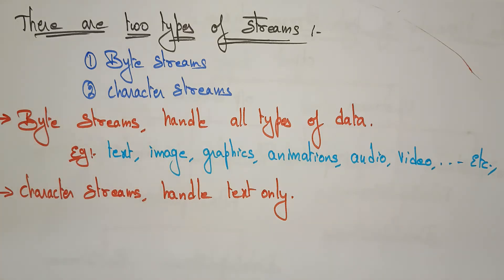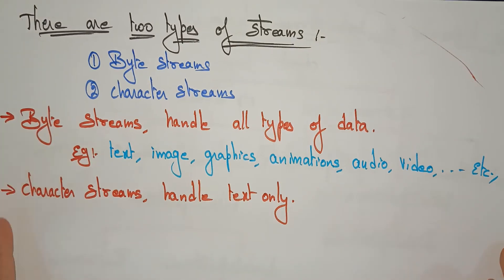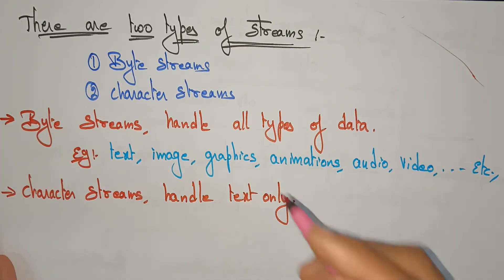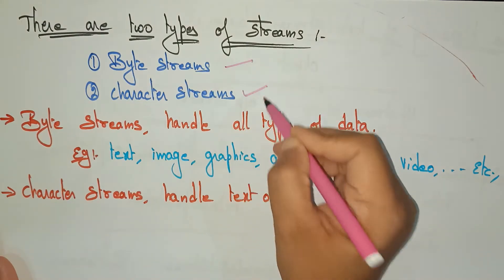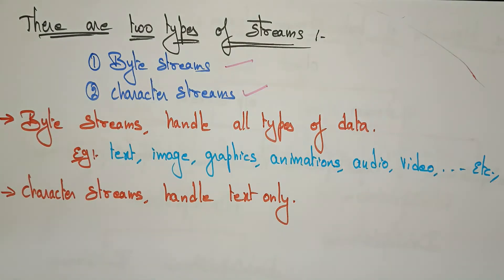Hi students, welcome back. In this video I am going to explain about the types of streams. There are generally two types of streams: one is a byte stream and another is the character stream.